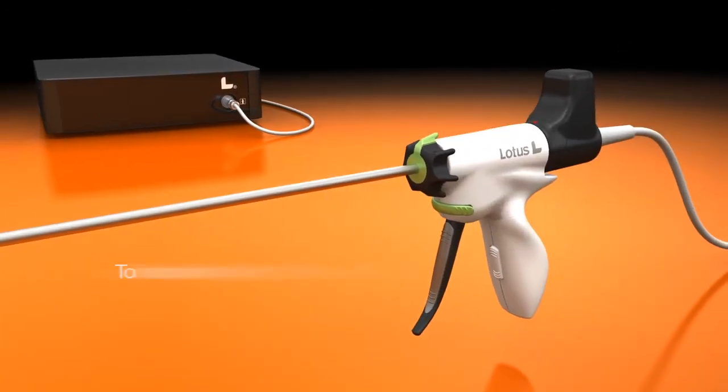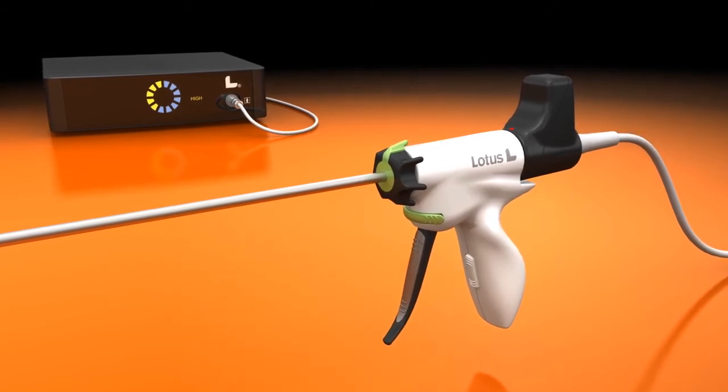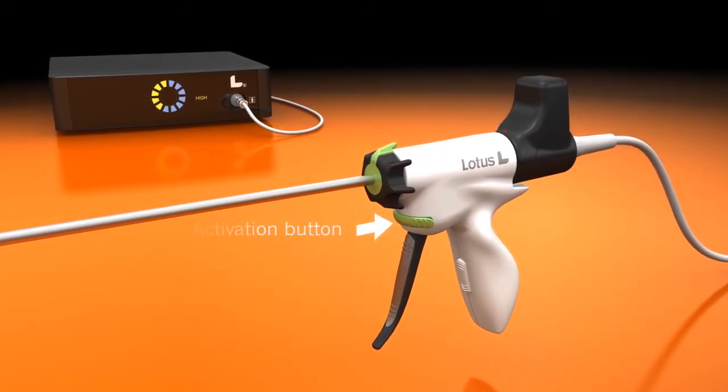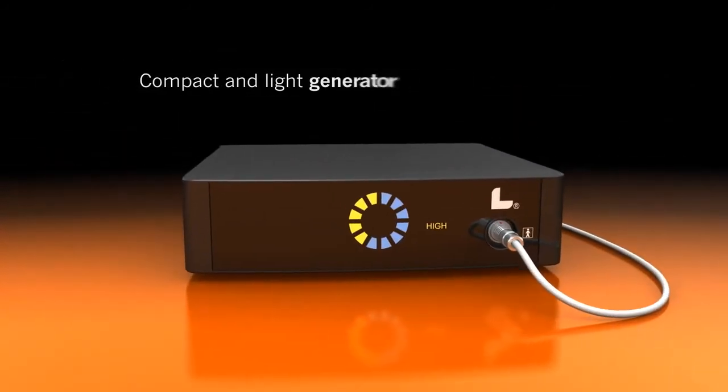To initialise the handpiece, press the power select button. The Lotus plug and play concept comprises a user-friendly instrument and a compact and light generator.